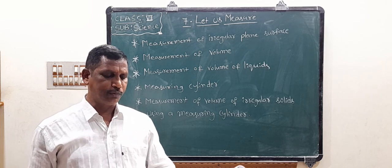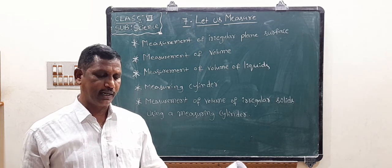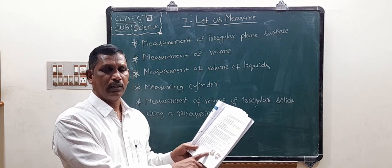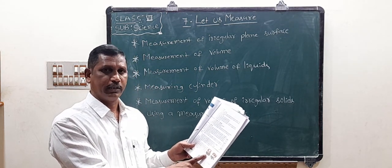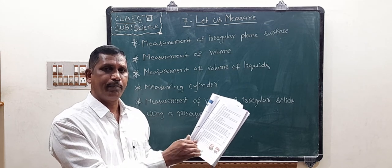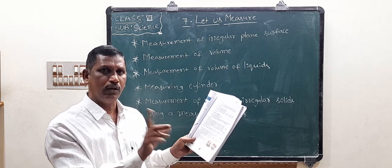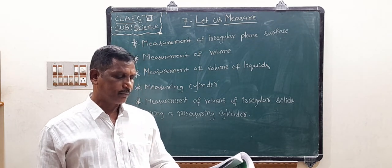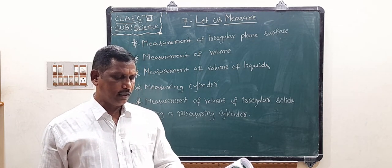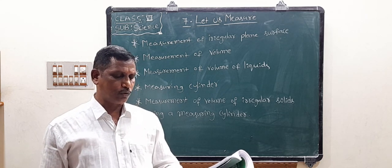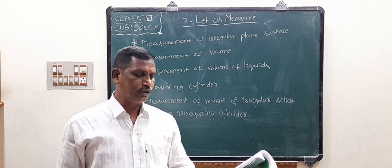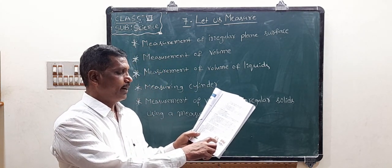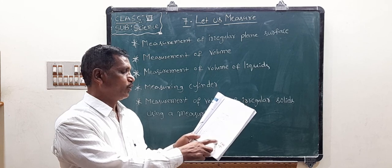There are identical small cubes with length, breadth, and height each equal to one centimeter. The cardboard box has length three centimeters, breadth two centimeters, and height two centimeters. We place three cubes in a line to cover the entire length of the box.